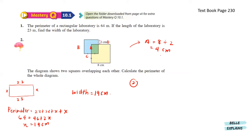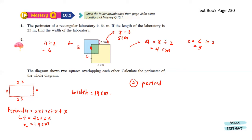Now we can find B: B equals to 4 plus 2, which is 6. For C, C equals to 6 divided by 2, which is 3 centimeters. And lastly for D, it will be this side minus this length. D equals to 8 minus 3, giving us 5 centimeters. Now that we know all the lengths, the perimeter equals to 6 plus 2 plus 5 plus 8 plus 8 plus 4 plus 3 plus 6. Adding all of this together, we get the perimeter at 42 centimeters.